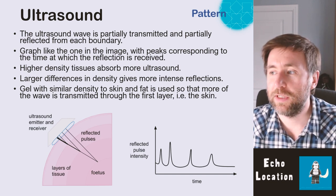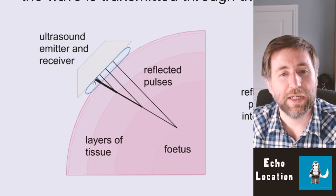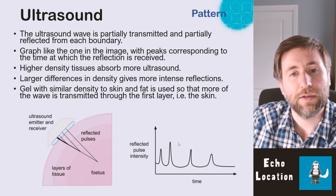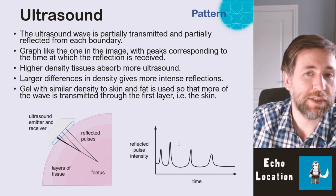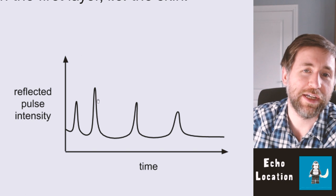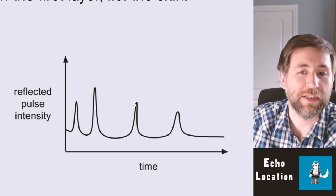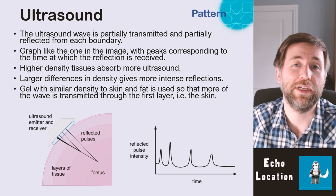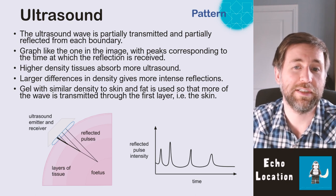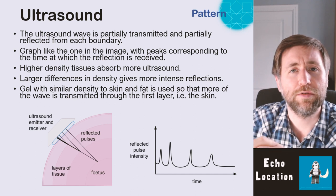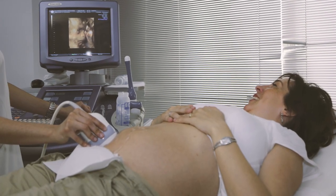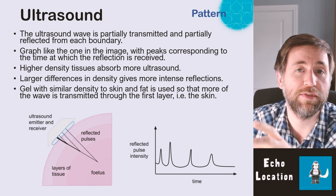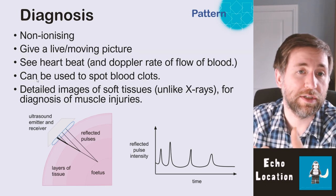Each pulse is partially reflected and partially transmitted through each boundary, giving a graph with peaks corresponding to the time at which each reflection is received. Higher density tissues absorb more ultrasound, giving different peak sizes. Larger differences in density produce more intense reflections. A gel is applied to the skin which has a similar density to skin and fat, meaning more of that initial wave is transmitted through the first boundary.